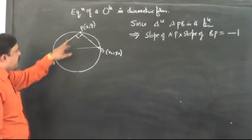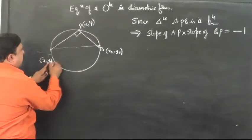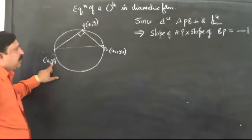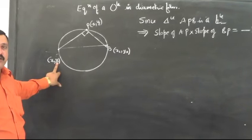Now what is the slope of AP? If you look at the slope of AP, AP is the join of X1, Y1 and X, Y. You know that the slope of a line joining the points X1, Y1 and X2, Y2 is...